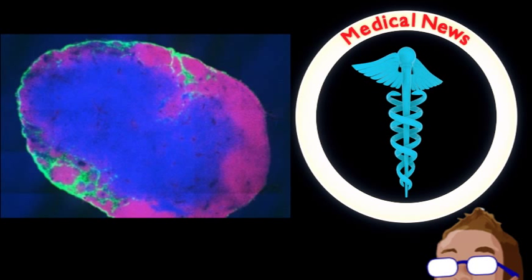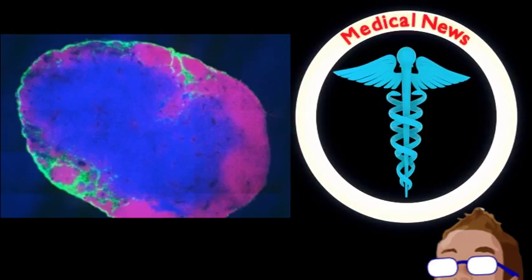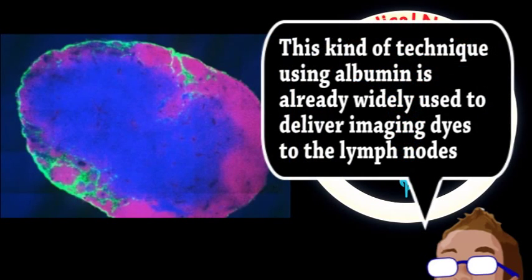A blood protein called albumin naturally binds to fatty acids and delivers them to the lymph nodes. So they combined their active vaccine molecules with a fatty acid. In experiments with mice,